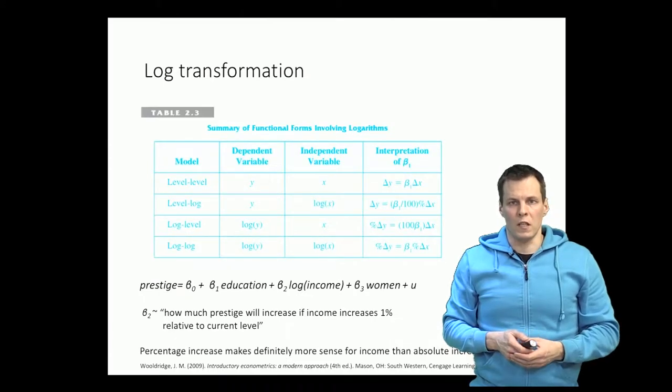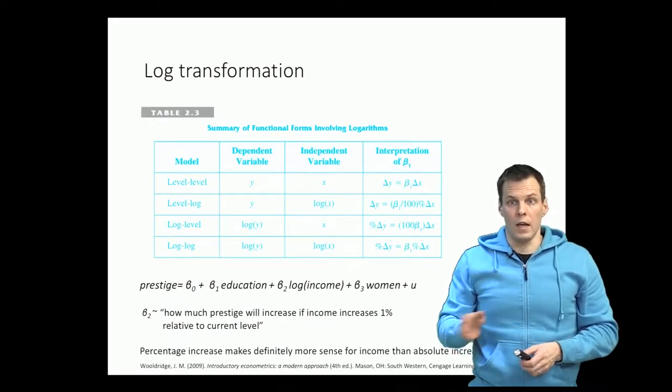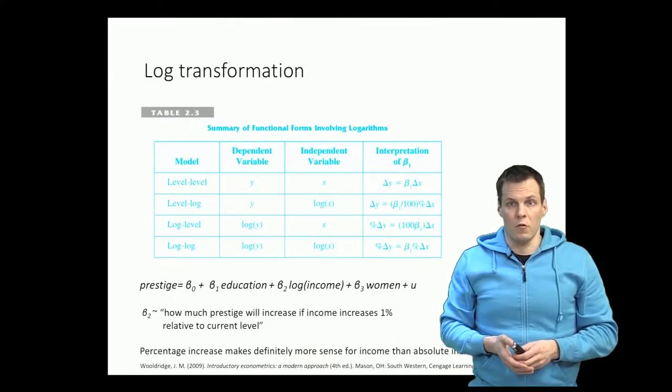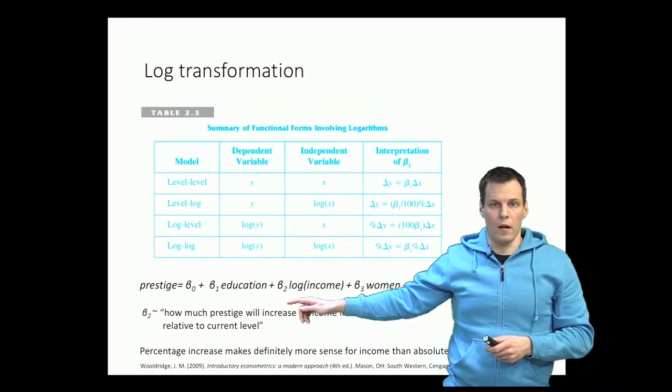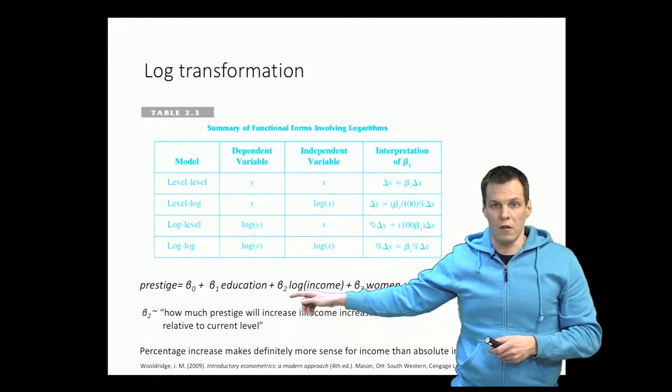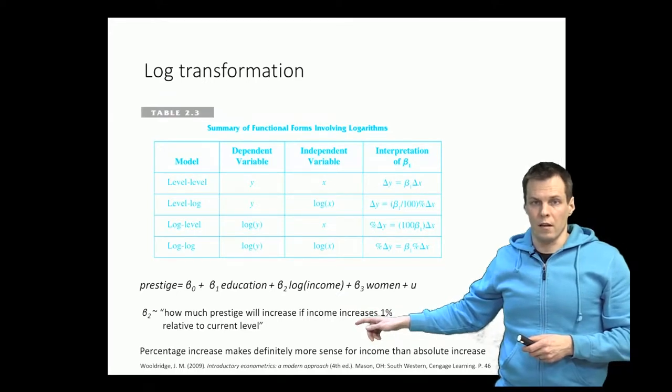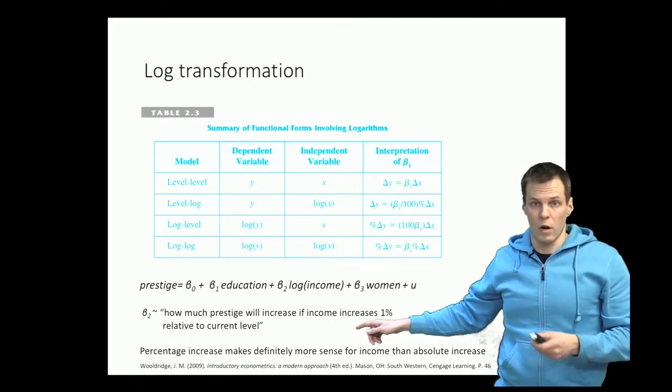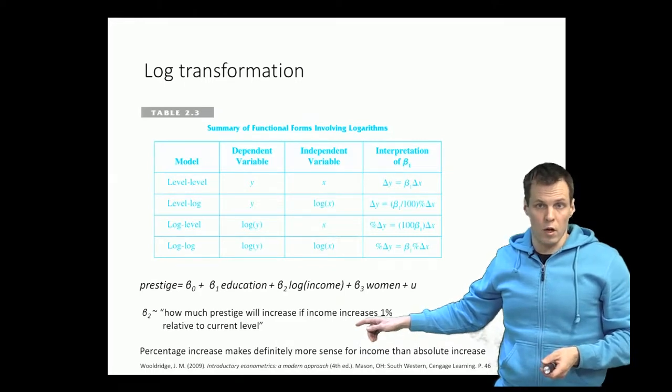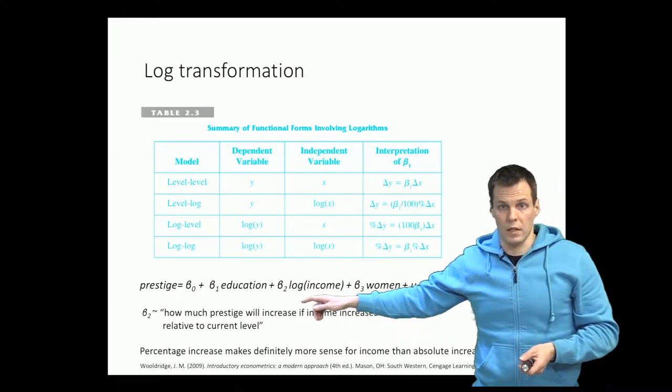Let's first review the log transformation. The idea of log transformation is that we take a log of either our dependent variable or any of the independent variables, and that changes the interpretation of that variable to relative units. For example, if we're saying that prestige depends on log of income, then our interpretation of beta 2 would be how much our prestige will increase if income increases 1% relative to the current level. So we are talking about relative effects of income changes to prestige.